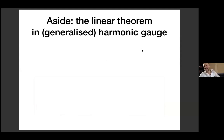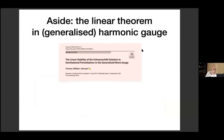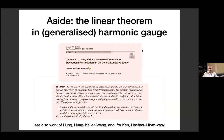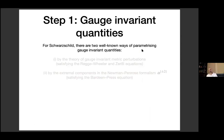Subsequently, linear stability has also been shown in harmonic and generalized harmonic gauge — sometimes called wave gauge. This is the theorem of Tom Johnson, published recently: a precise analog of our theorem but in this other gauge. This type of result has also been proven by Hung, Keller, and Wang from Columbia University, and recently generalized or some version generalized to Kerr by Häfner, Hintz, and Vasy.